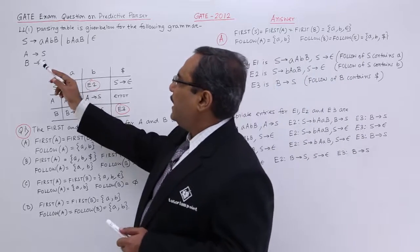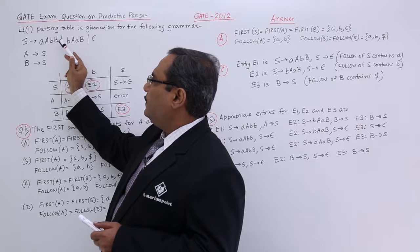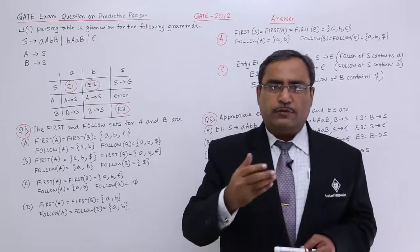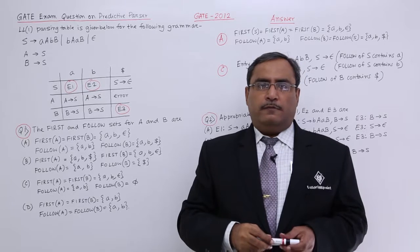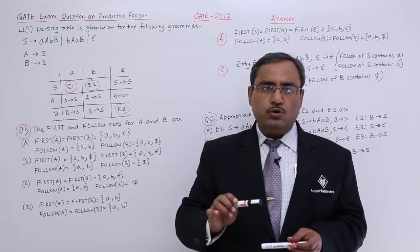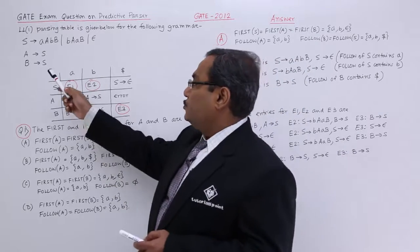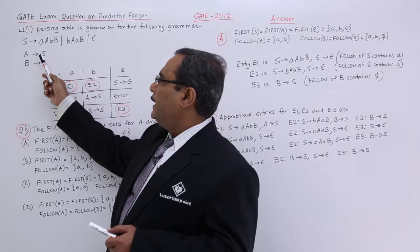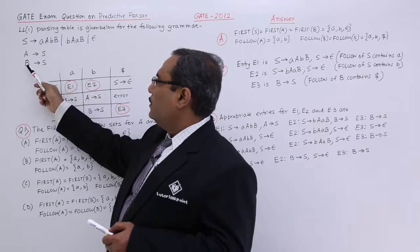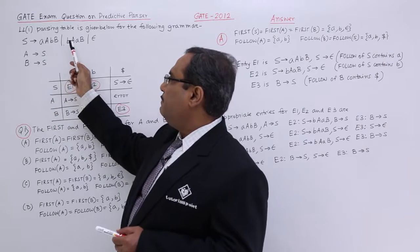If you go for the first calculation of S, it will be A, B and epsilon. Please watch the video where we have done the first and follow calculations elaborately with the rules, with the respective examples. For first of A, I shall be getting first of S. That means A, B, epsilon and first of B will be nothing but first of S and that is A, B and epsilon.